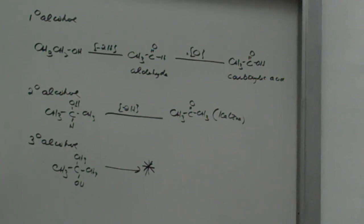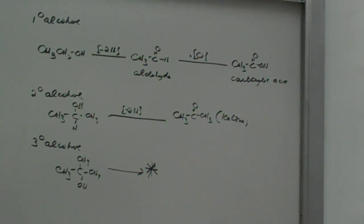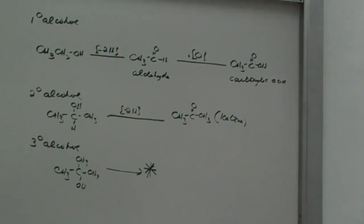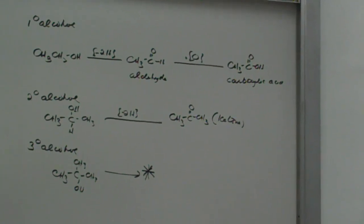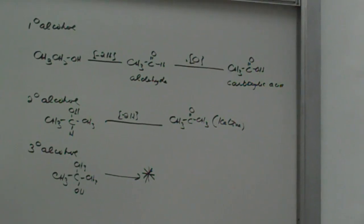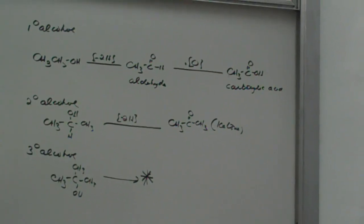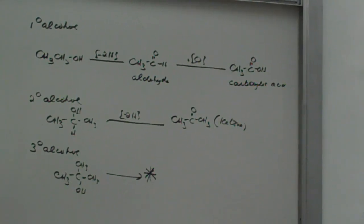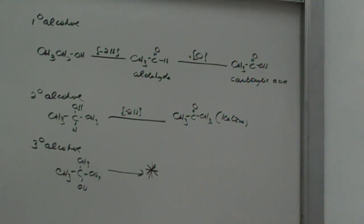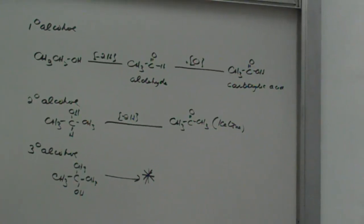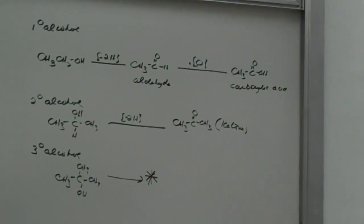So oxidation is a very useful way of helping us distinguish between primary, secondary, and tertiary alcohols. The primary alcohol will be oxidized either to an aldehyde or an acid. The secondary alcohol is oxidized to a ketone, and the reaction stops there. If we try to oxidize a tertiary alcohol, no reaction takes place.